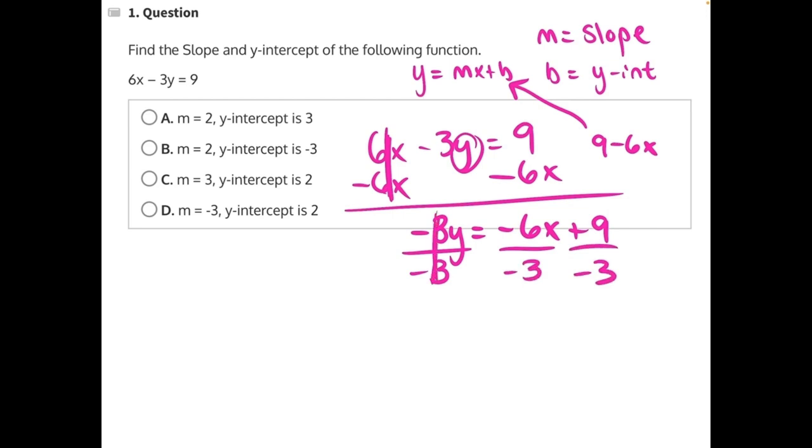These negative 3s will cancel, leaving us with y equals negative 6 divided by negative 3, the negatives cancel, leaving us with 2x, and then positive 9 divided by negative 3 will yield a negative 3.